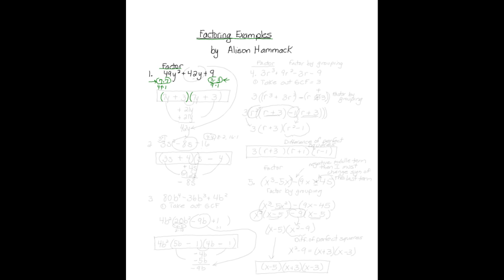A trinomial always factors into two binomials. So in this first position, I put these factors: seven y times seven y. Then I'm going to put the three and three in these positions. My smile will check if I've done this correctly, because my smile checks for the middle term. Three times seven y is twenty-one y, and seven y times three is also twenty-one y. Down here, I put what I want to get — I'm trying to get forty-two y.